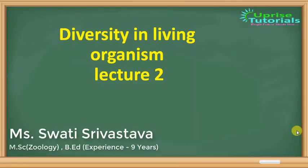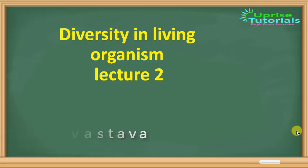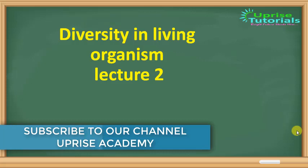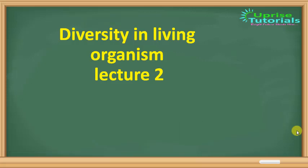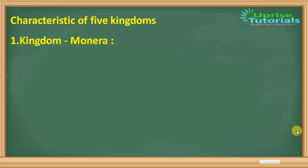Hello class, today I am going to start the next lecture of your chapter 'Diversity in Living Organisms.' In this chapter we are going to discuss about the five kingdom system. In the previous lecture we learned about the two kingdom system. The two kingdom system had all organisms divided into Plantae and Animalia, but organisms like fungi showed neither plant nor animal characteristics, so the five kingdom system was introduced. The five kingdoms are: Monera, Protista, Fungi, Plantae, and Animalia.